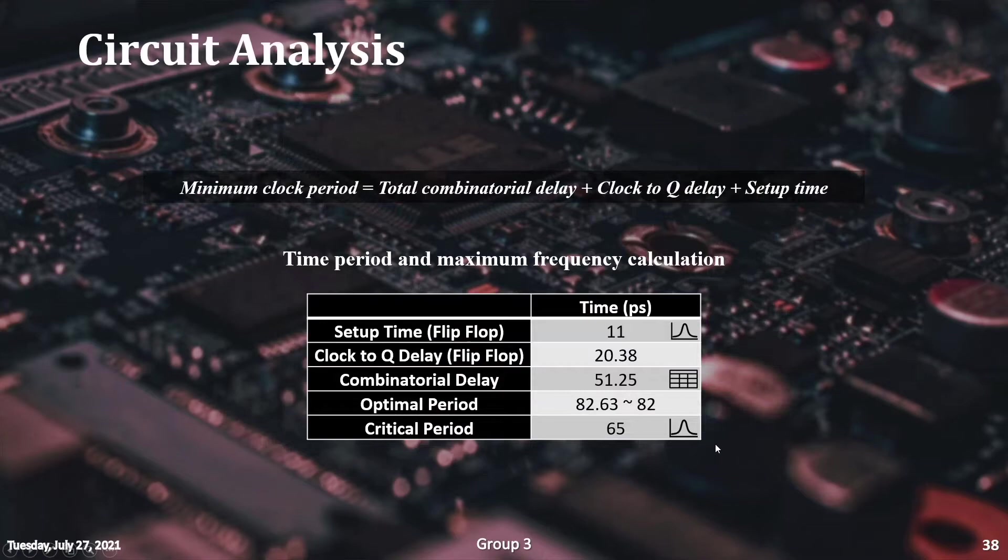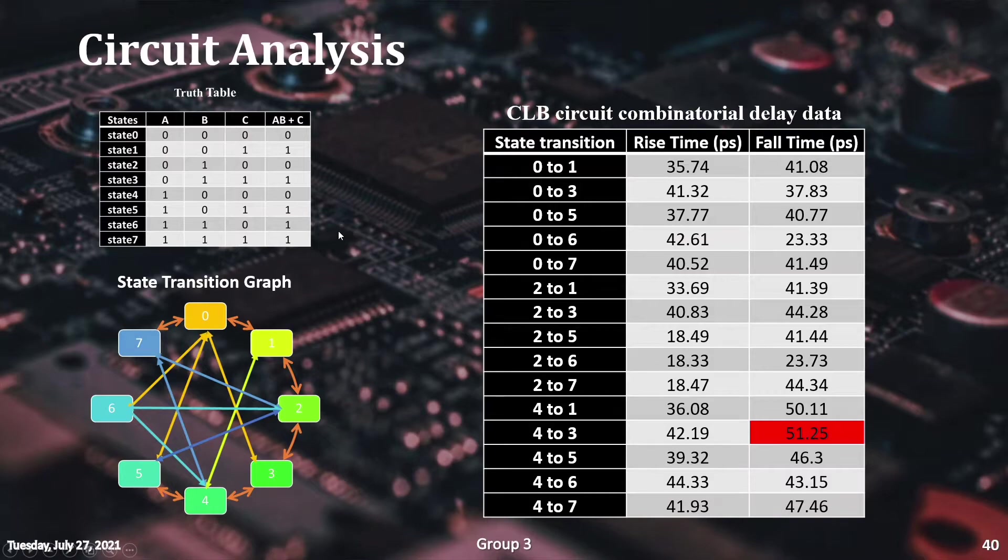The total combinatorial delay is slightly complicated. All the state transitions via output toggles were taken into account for delay measurement. All the inputs were simultaneously changed for a state transition and the time required for output transition is taken as the delay for that case. By filling up the chart, worst case delay was found.